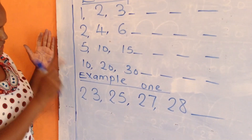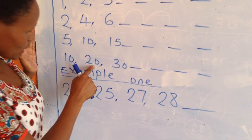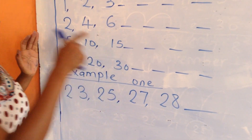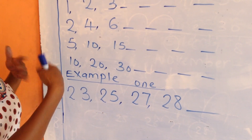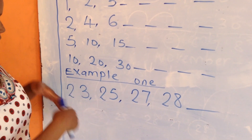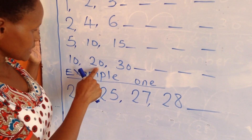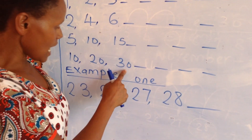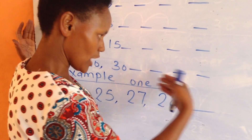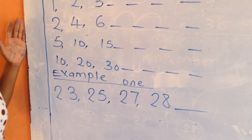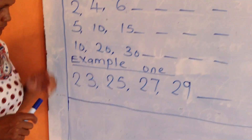The last example: I've given you 10, 20, 30. This is still a number pattern, but I've skipped my numbers in 10s. 10, 20, 30, 40, 50 — and you can continue with your pattern, but you skip in 10s.